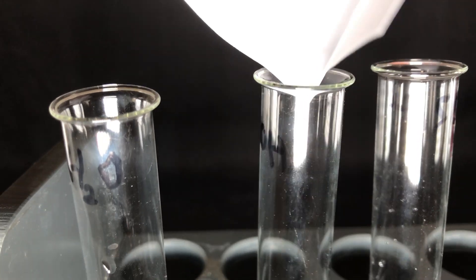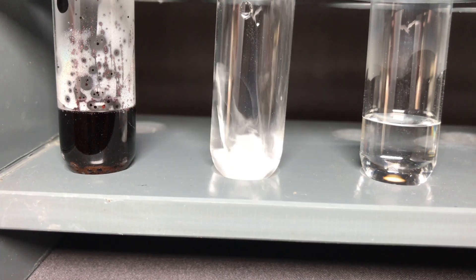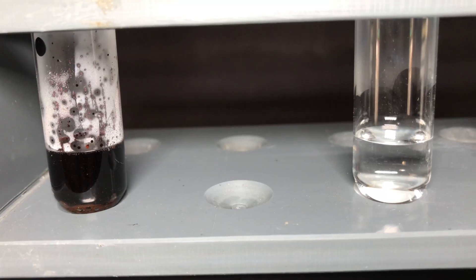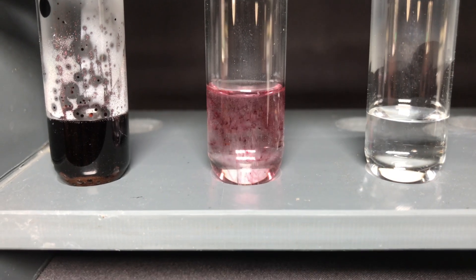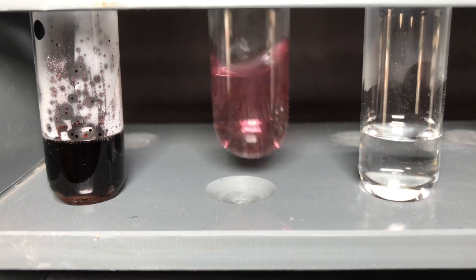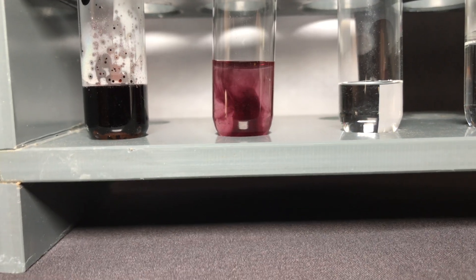In alkaline solutions ferrate does not decompose as quickly. Therefore we used some potassium hydroxide in water and then added the ferrate. Potassium ferrate powder might look black and boring, but as you can see when you put it into an alkaline solution you get this beautiful reddish solution.